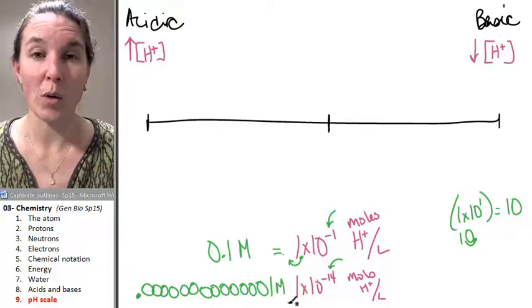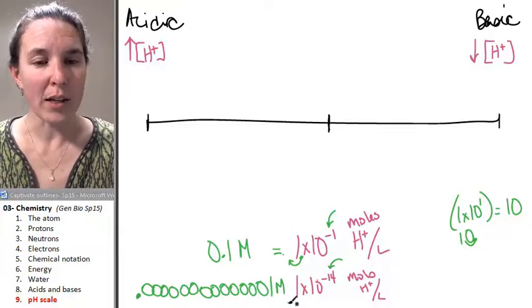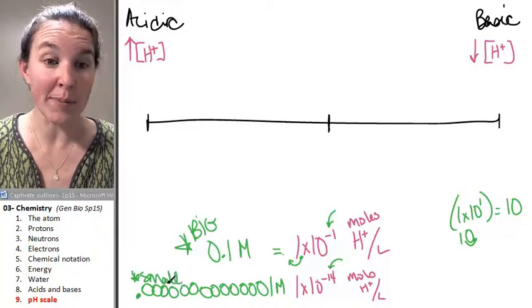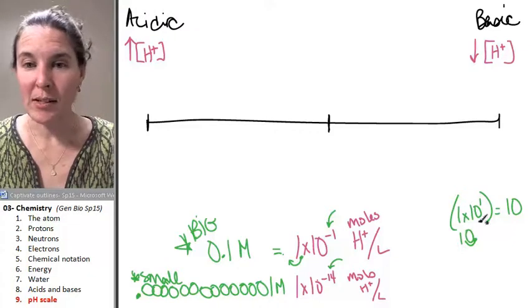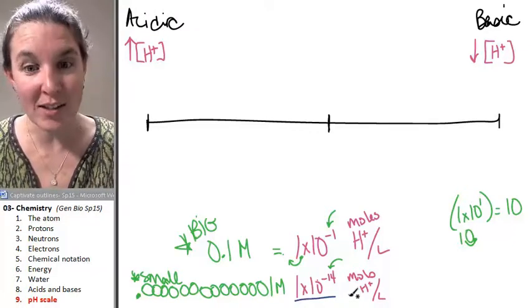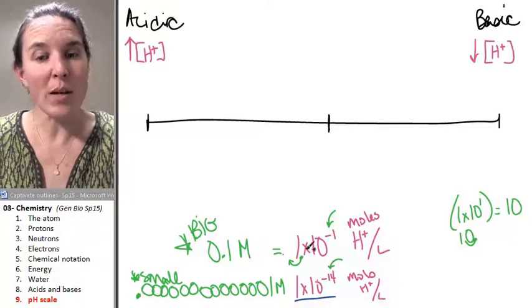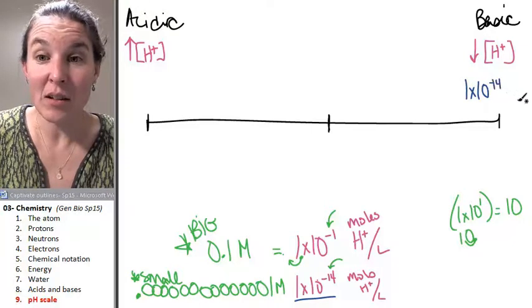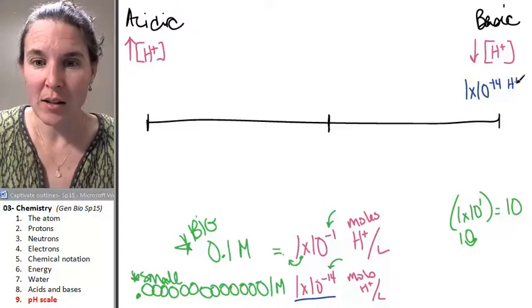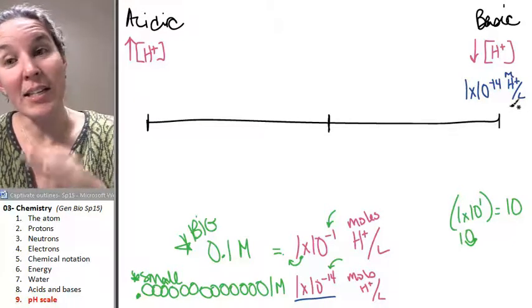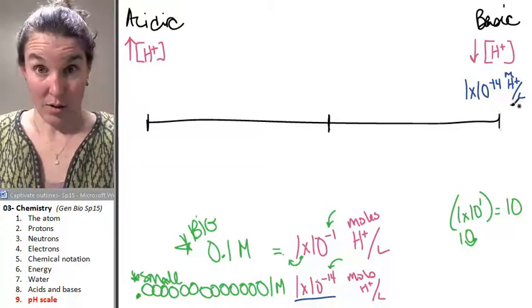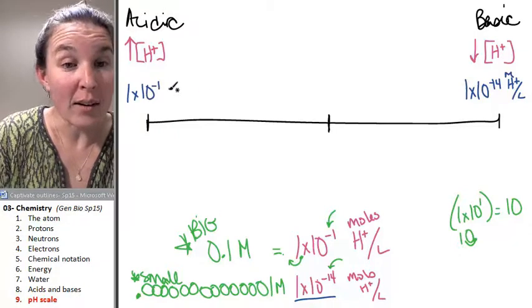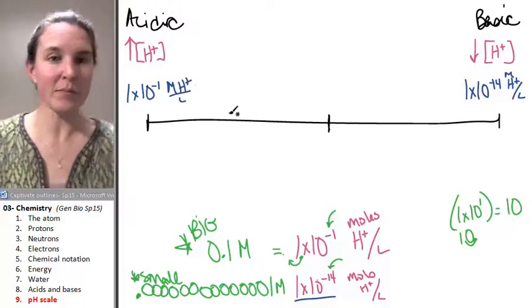Which one has more hydrogen ions? Hopefully, you recognize that this number is big compared to this number, which is small. 1 times 10 to the negative 14 has fewer hydrogen ions. That's a smaller concentration of hydrogen ions than 1 times 10 to the negative 1. So, let's throw 1 times 10 to the negative 14 hydrogen ions, molarity hydrogen ions per liter on the basic end because there aren't as many hydrogen ions. And what's going to go on this end? 1 times 10 to the negative 1 moles of hydrogen ions per liter.